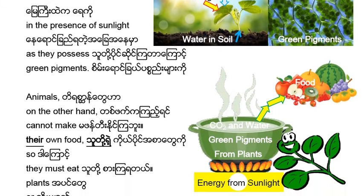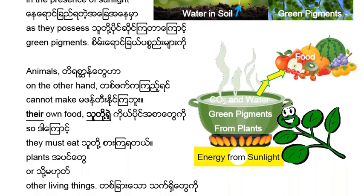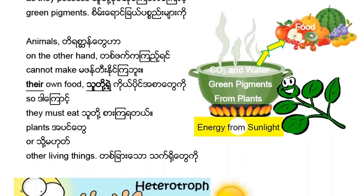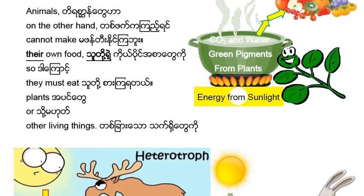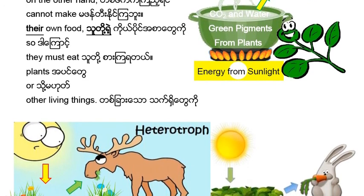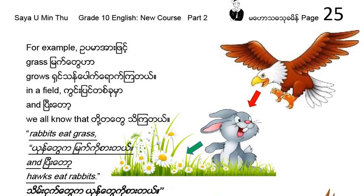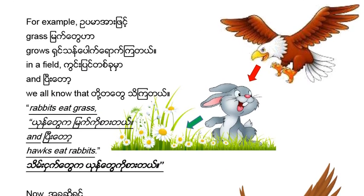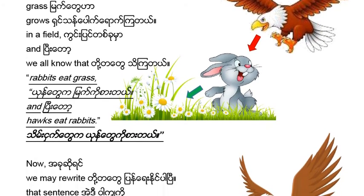Animals, on the other hand, cannot make their own food. So they must eat plants.